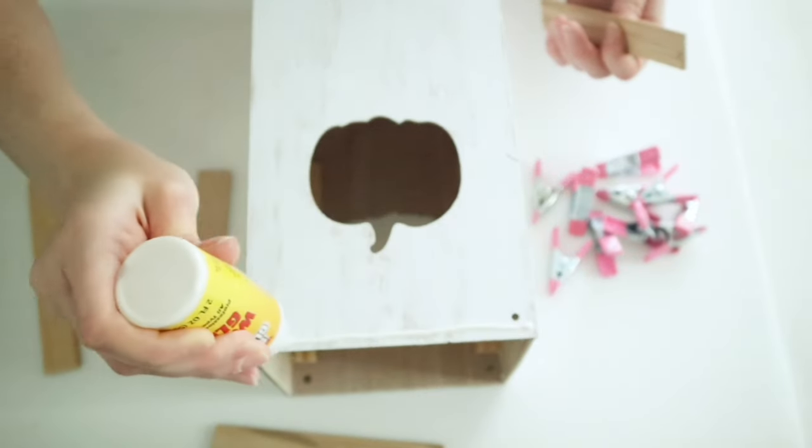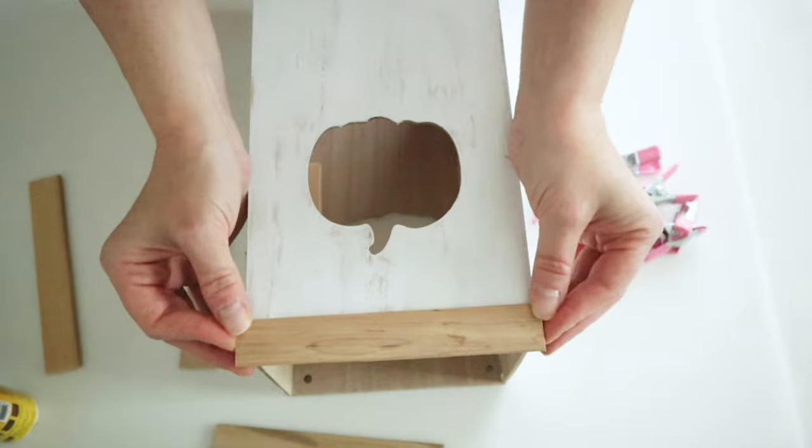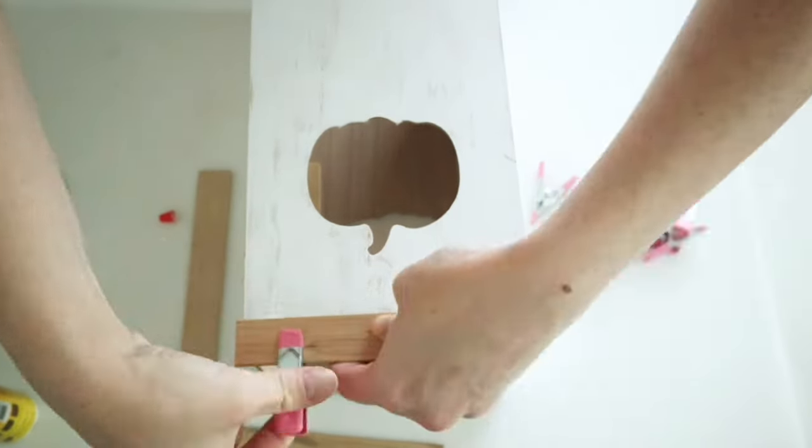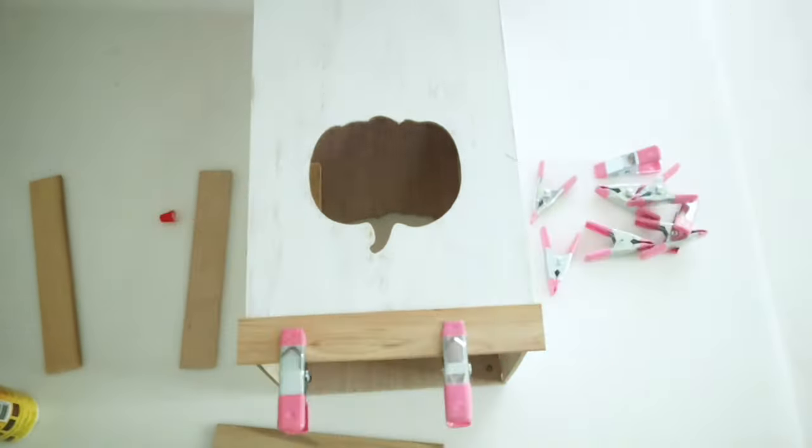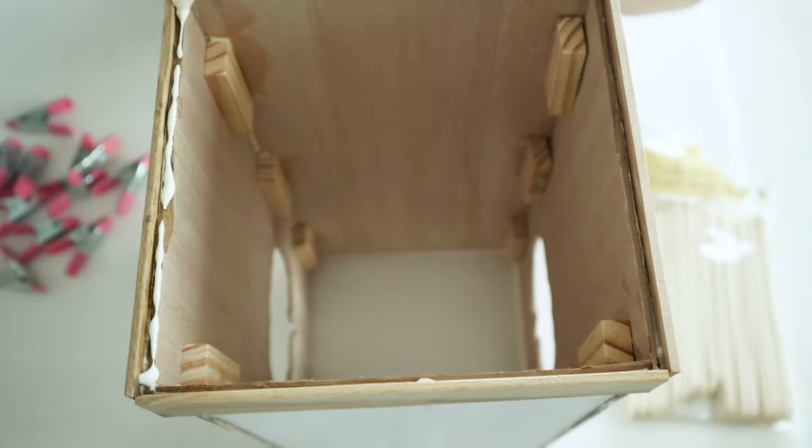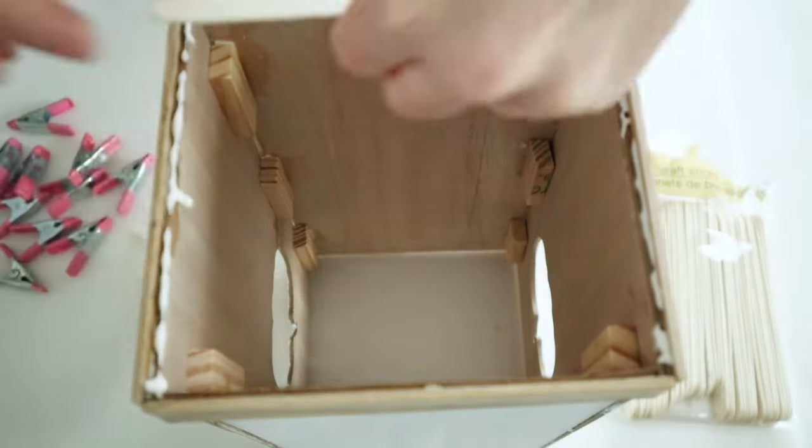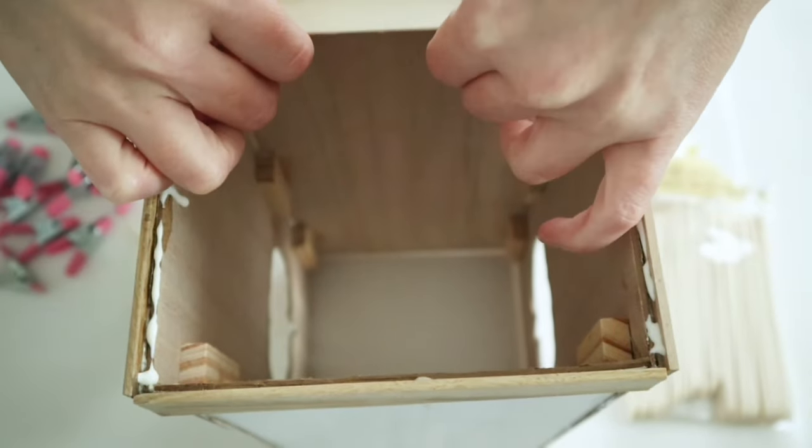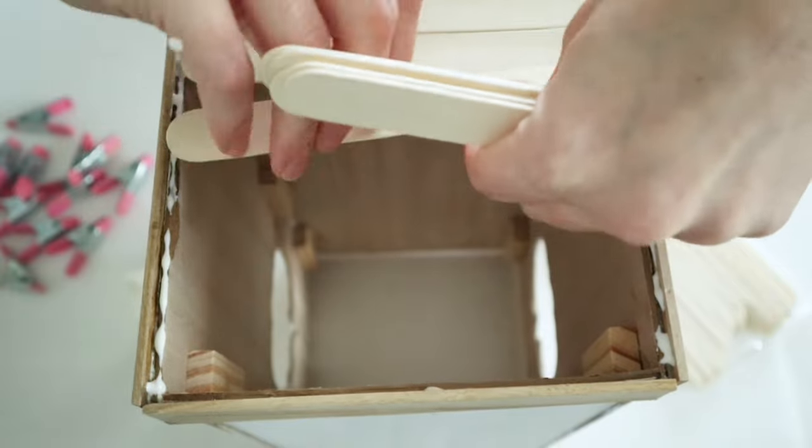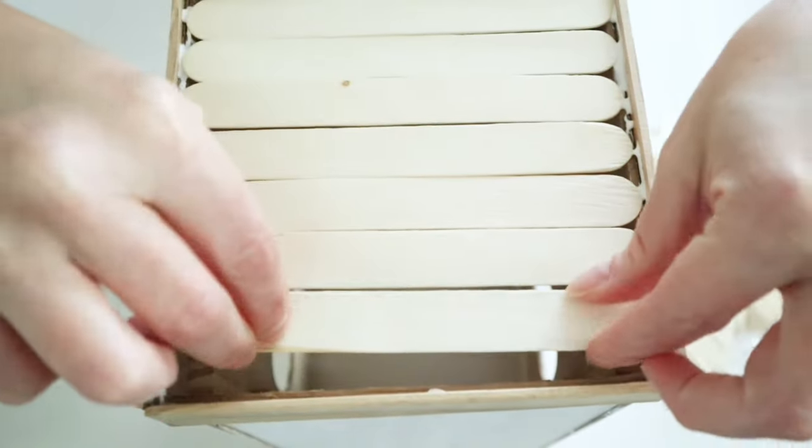And then the last step for this project is I just used some wood glue and some of Dollar Tree's thicker craft sticks to make a bottom for this. You can see there's kind of a little lip that I made with the paint stir sticks so that I could just put these down in there. And here is how it turned out.